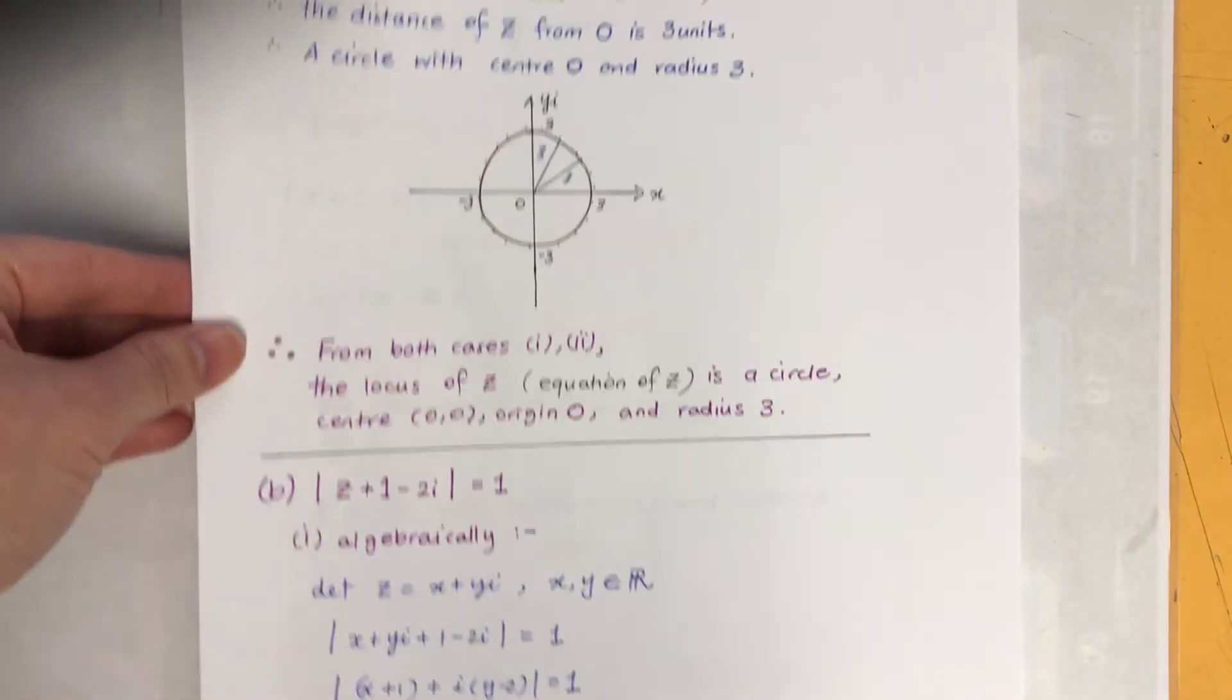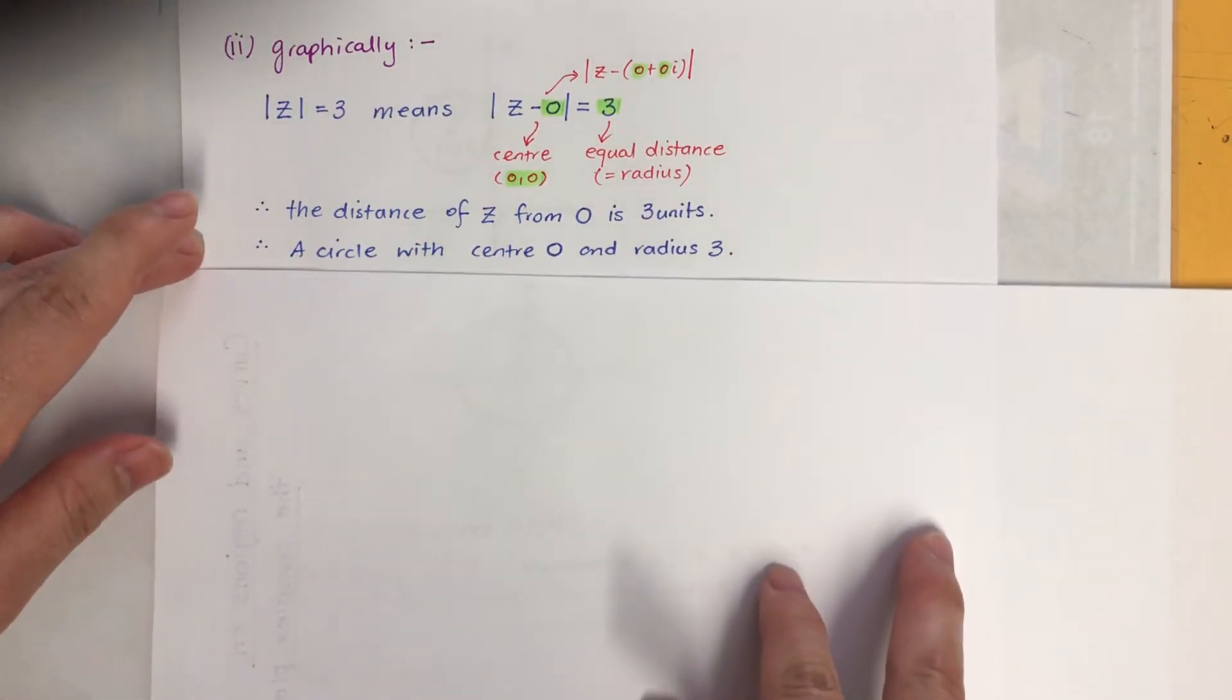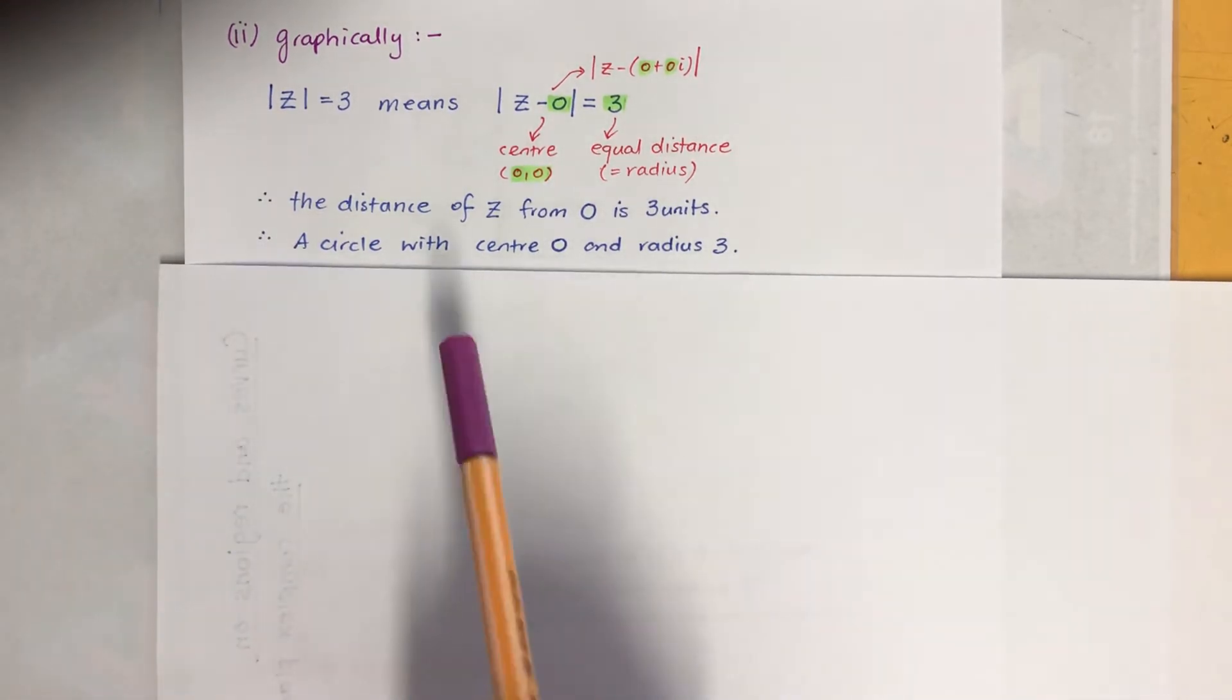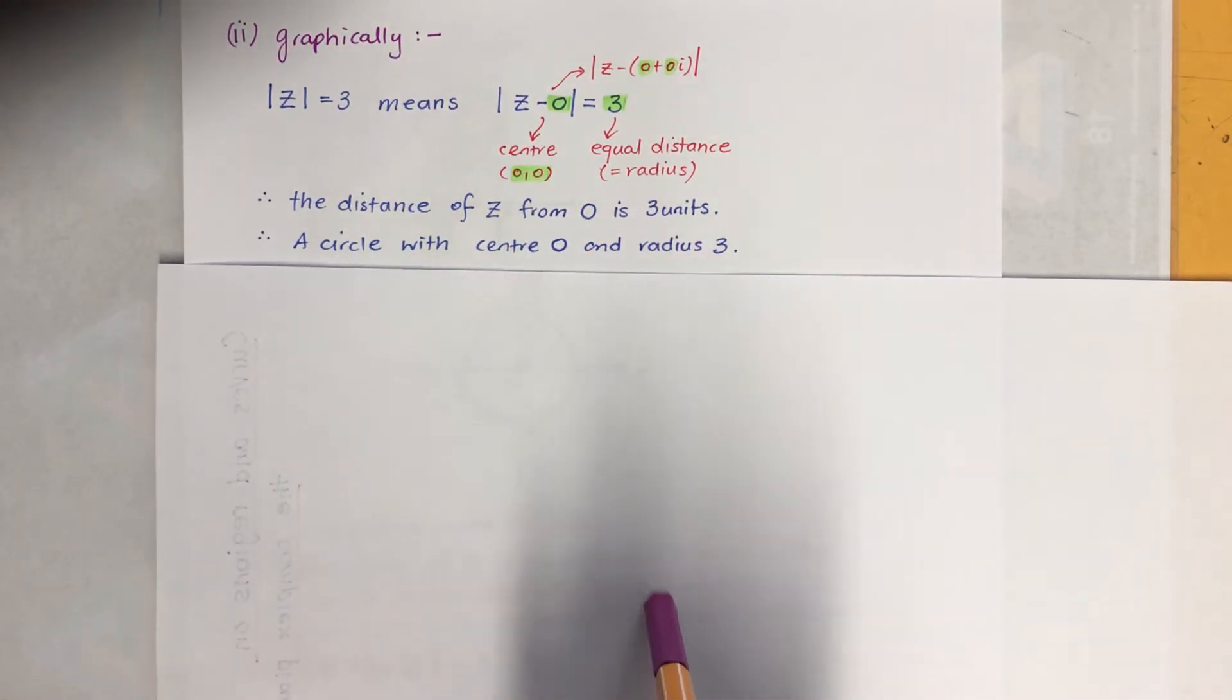Okay, let's have a look at graphically. So modulus Z equals 3 means... Now this really means Z take away, it's a 0, which is 0 real and 0 imaginary. So the center is 0,0 and the 3 is equal distance, which is radius. Okay, so the distance of Z from origin is 3 units. So from center to everywhere it's 3. So it's a circle with radius 3.